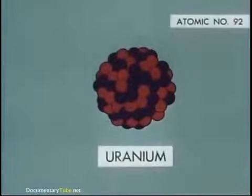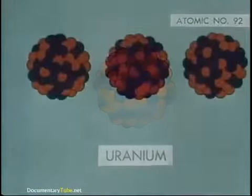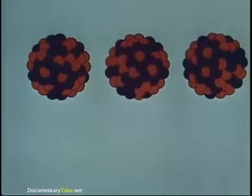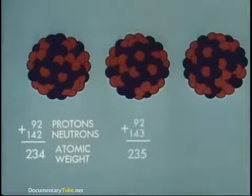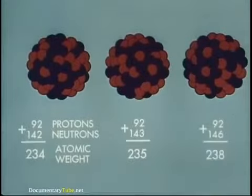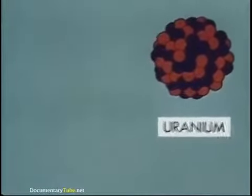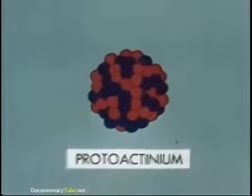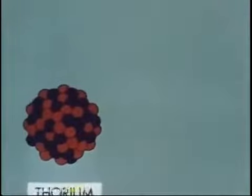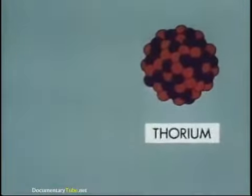At the top of nature's ladder is the most complex atom, uranium, with an atomic number of ninety-two. Naturally occurring uranium has three isotopic forms, with atomic weights of 234, 235, and 238. Uranium and its neighboring elements are maladjusted. Their atoms have an unstable number of protons and neutrons. So observing nature's law against lack of balance and symmetry, they try to become stable by getting rid of their excess nuclear freight.